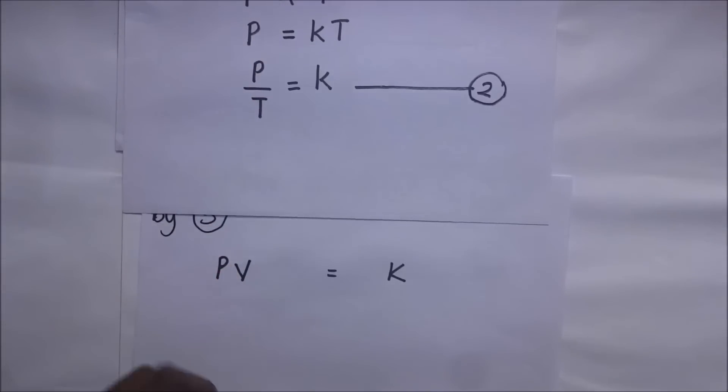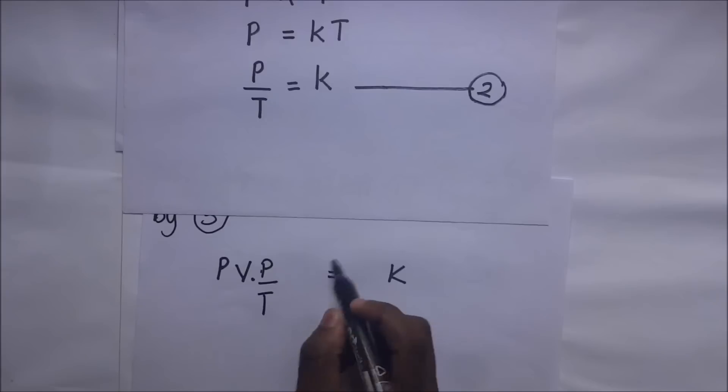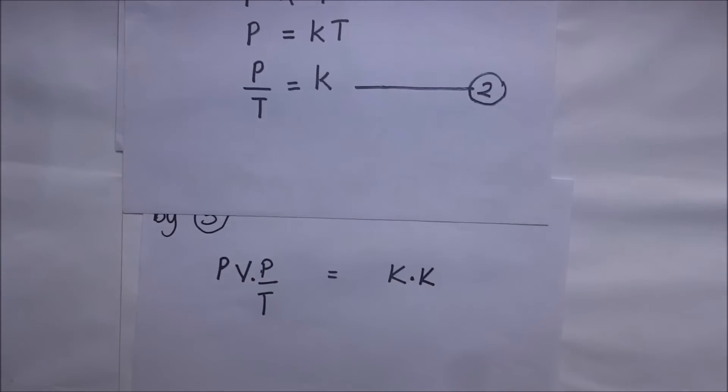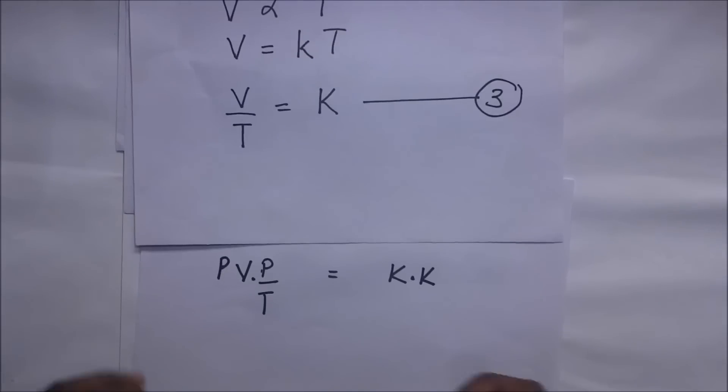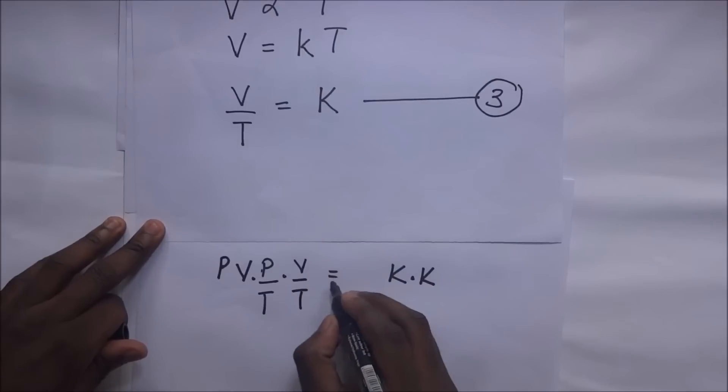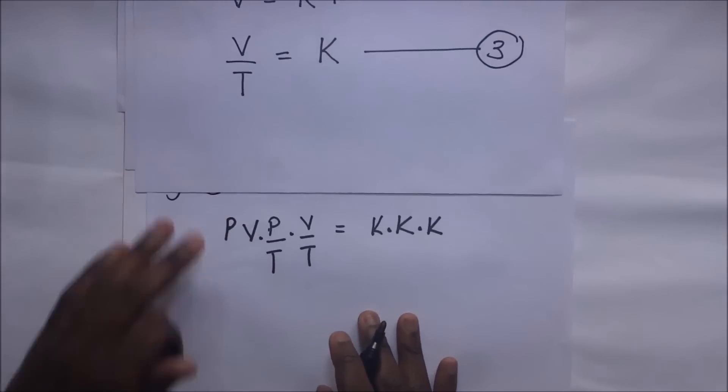We are going to multiply this by the second equation. So our first expression PV multiply that by P over T, and also the K multiply that by K on that side. So we go ahead and multiply the third equation as well. Our third equation is V over T, so multiply that by V over T equals K, multiply that by K also.